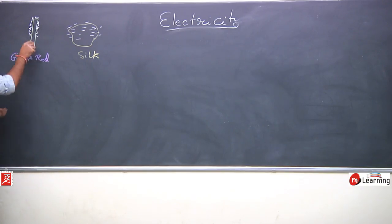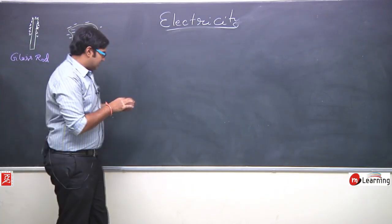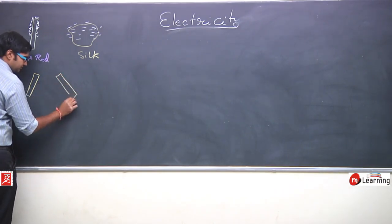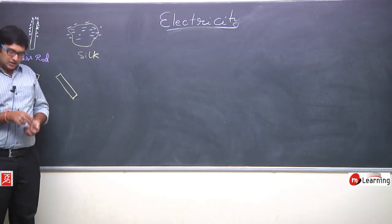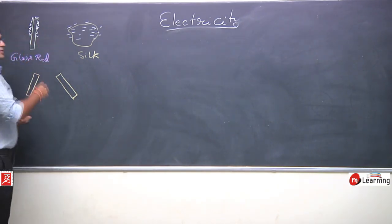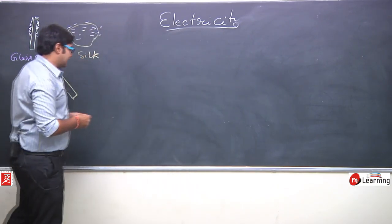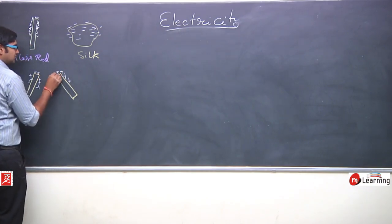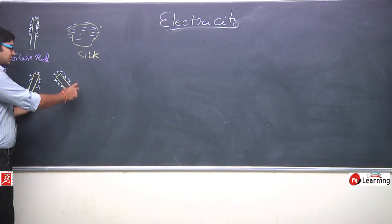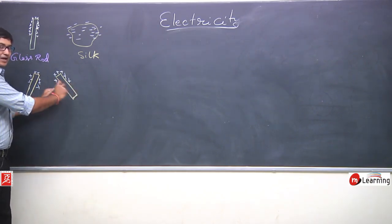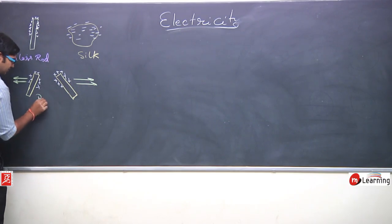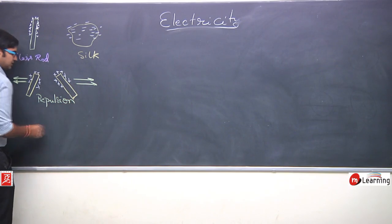If we take two glass rods rubbed with silk, both rods give their electrons to the silk and both become positively charged. When these two positively charged glass rods are brought near each other, repulsion is created between them.